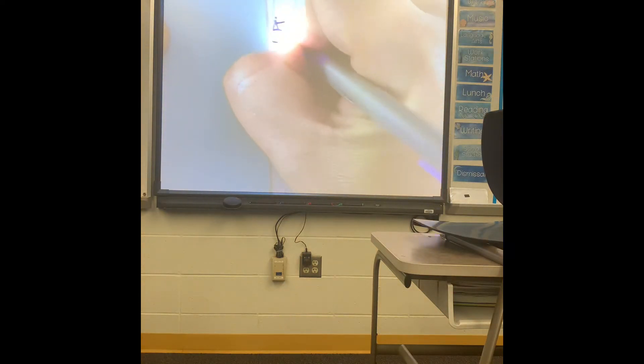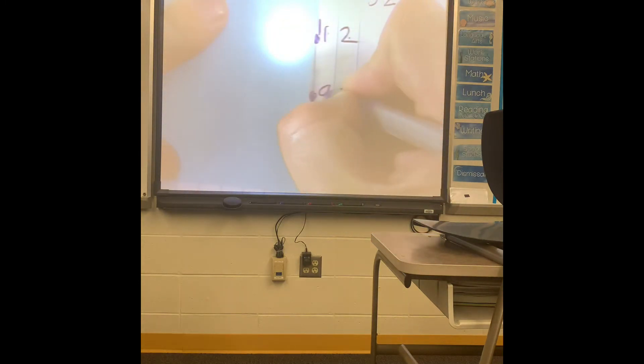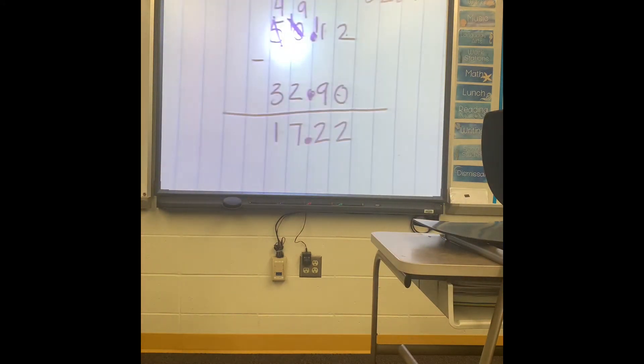But I also can't borrow from somebody who has nothing. So I have to borrow from my 5, make that a 4. Now I have 10. I still can't do 1 minus 9. But now they have 10. So now that's a 9, and now I have 11. Usually the kids have a hard time subtracting across zeros. So now 11 minus 9 is 2, 9 minus 2 is 7, and 4 minus 3 is 1. Bring down your decimal and your answer is 17.22.